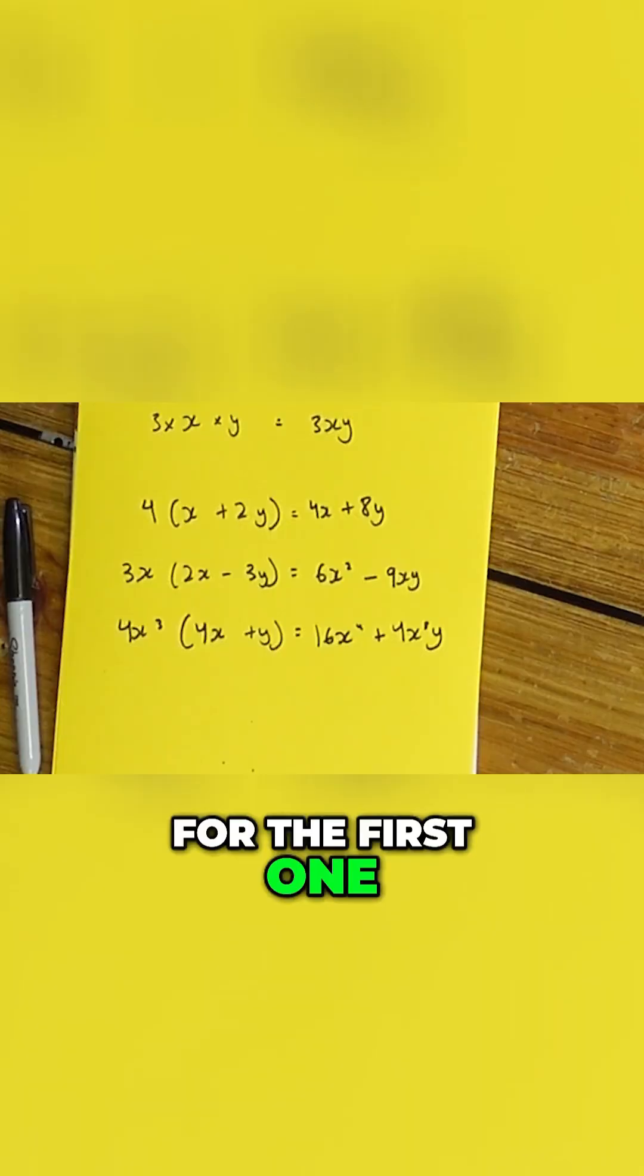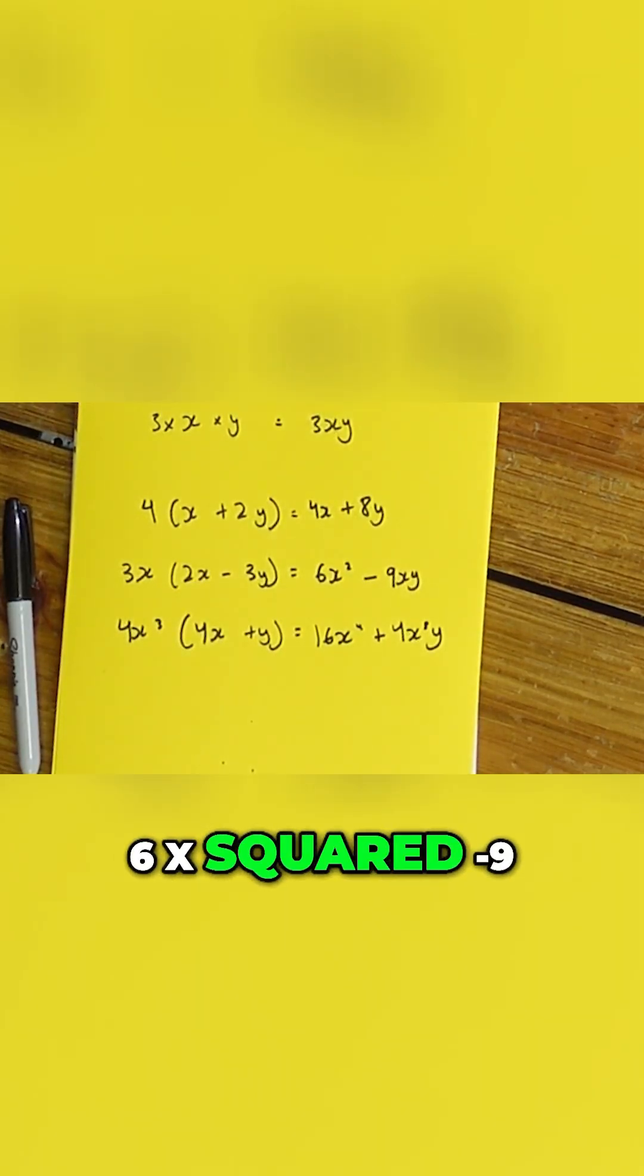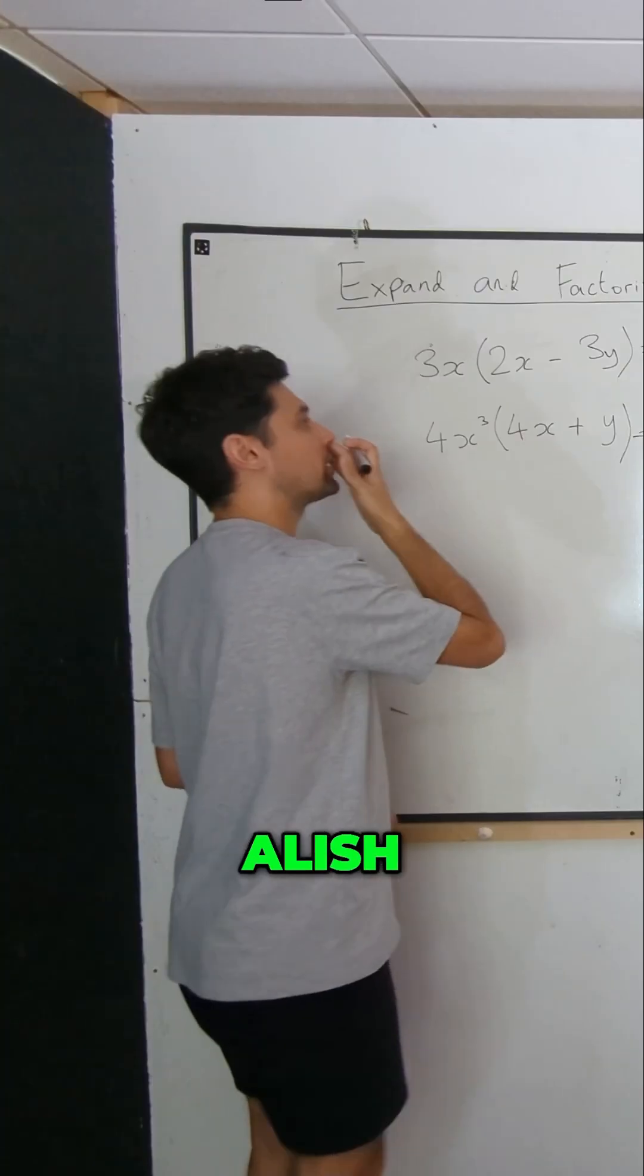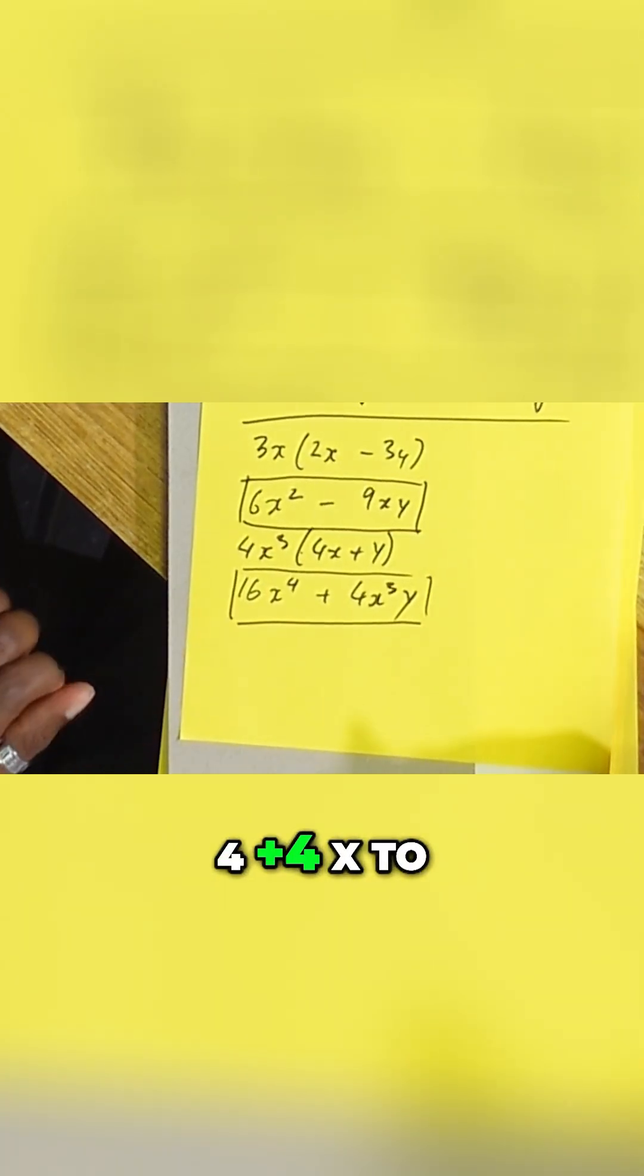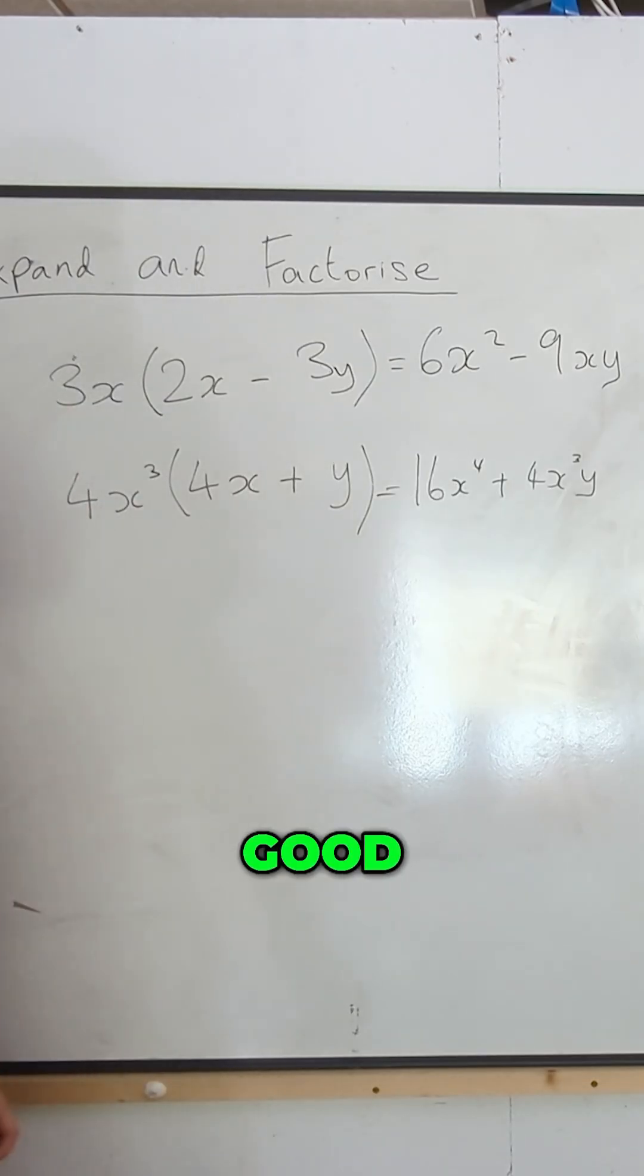Okay, what have we got for the first one? 6x squared. Good. Minus 9xy. Very good. Alish, can you tell me the second one? 16x to the 4 plus 4x to the 3y. Good. Very good.